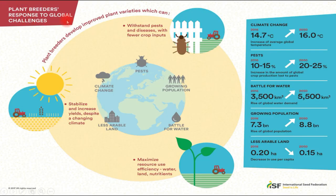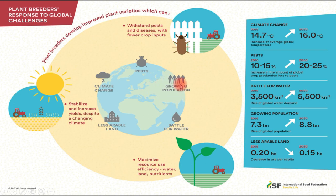Plant breeders must respond to major global challenges: the presence of pests, climate change, less arable land, the battle for water, and the growing population. Regarding climate change, the average temperature in 2016 was 14.27 degrees Celsius, and by 2050 it is believed to increase to 16 degrees Celsius.